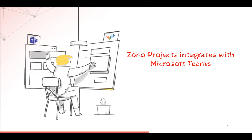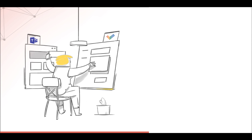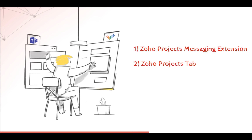It helps you to easily collaborate with your team by communicating with them via chat and working on tasks along with them. The three key features of this integration are: Zoho Projects Messaging Extension, which helps you to instantly pull task details within Teams and bring more context to your conversations; Zoho Projects Tab, which helps you to view and manage all tasks and even make updates without having to switch tabs; and Zoho Projects Bot, which makes keeping track of your tasks easier. You can post updates of all tasks in all your team channels with just a few clicks. Now let's see how these three features can be enabled and used within Teams.